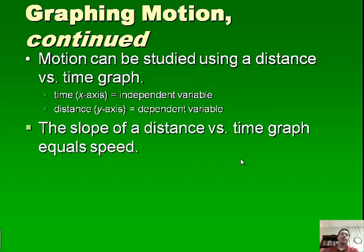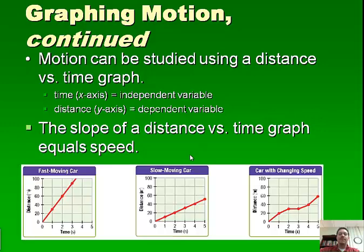And then the slope, once we connect the points, so we're going to make a line graph, we're going to connect those points. The slope of this is going to give us speed. So we've got time on the x-axis, distance on the y-axis. So we plot these points and we can see that we've got some different graphs here. This is a faster moving car because the slope of the line is greater than this. We've got a flatter line, this is a slower moving car. And then when the line is not straight, we've got variable, we're changing speed.